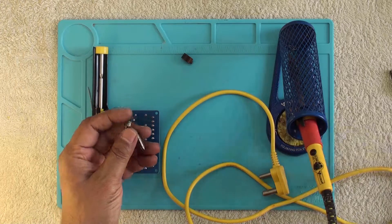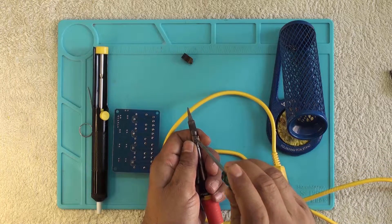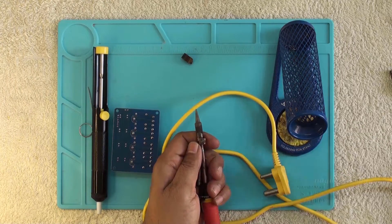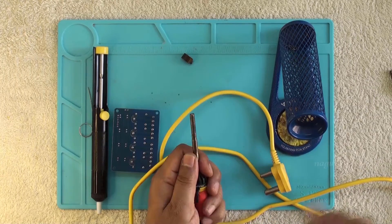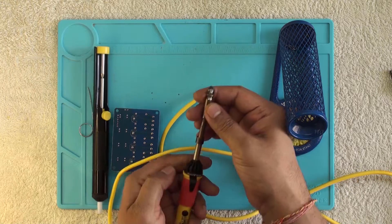Let's choose 1.6 mm bit. To change the bit, let's open this clamp to remove the soldering bit. Let's put the soldering bit and tighten the clamp.